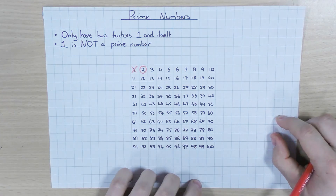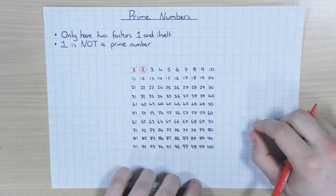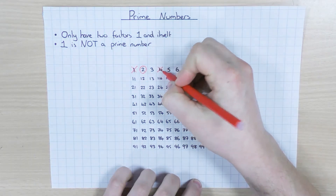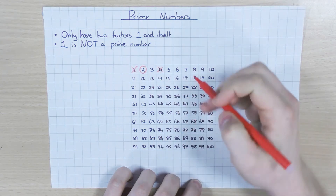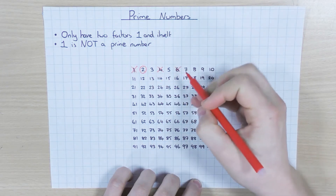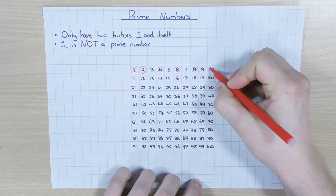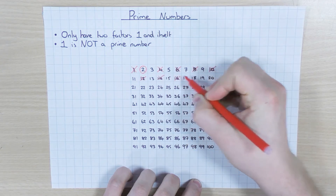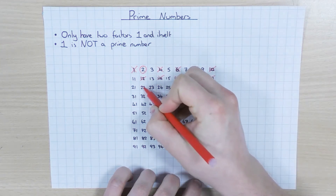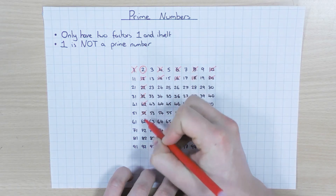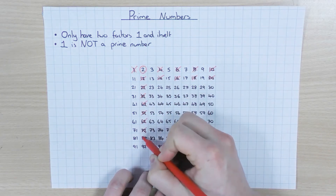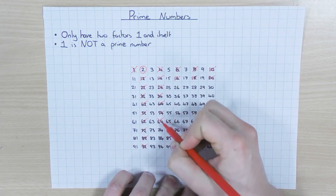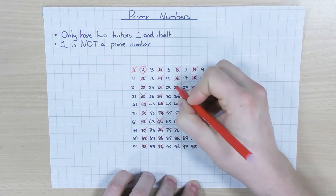So because 2 is a prime number, I'm now going to get rid of all the numbers that are in the 2 times table. So I'm going to get rid of 4, because 4 is not prime because 2 will be a factor. 6 won't be prime because again 2 is a factor. Neither will 8, 10, 12, 14, and so on. Basically all the even numbers — they're all going to be down these columns. All these numbers that are even are not going to be prime, because 2 will be a factor. So I'm just going to cross them all off — they are not prime numbers.